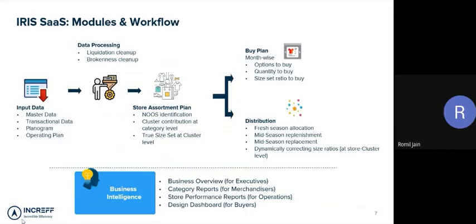At a high level, let me walk you through what the product does so you have a road map in mind. You need master data — the list of your stores, styles and SKUs, and some of their attributes. Then it takes transactional data, which is your SKU-wise sales with applied discounts and selling price. Then your planogram — how many categories, what quantity you want to keep in the stores. And finally your operating plan — what sort of revenue you are expecting from all your stores, online or offline.